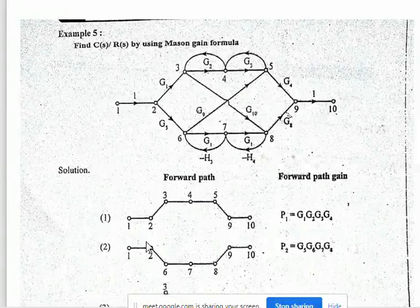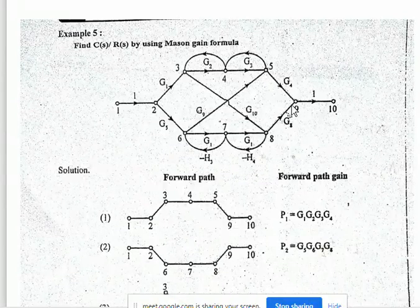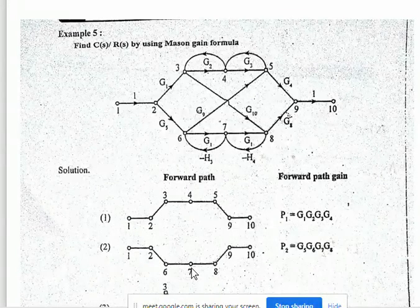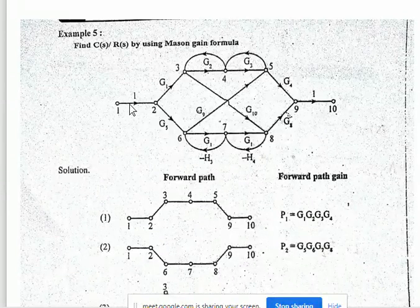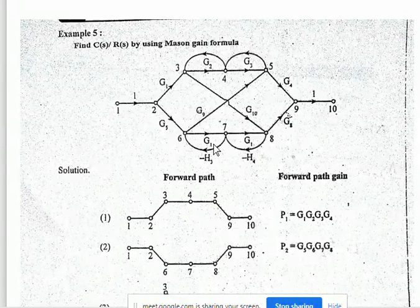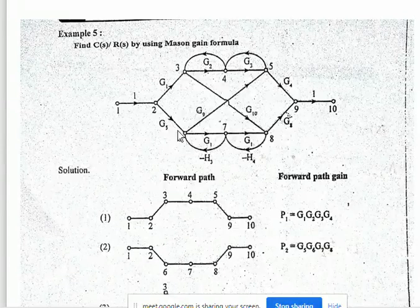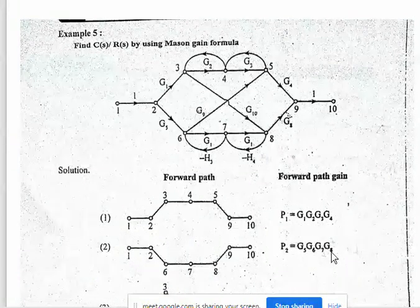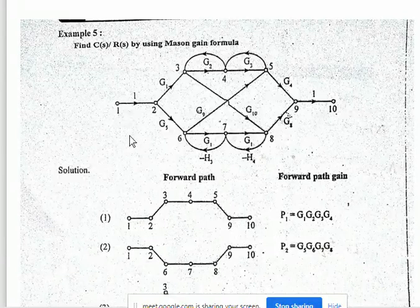The second forward path is 1 to 2, 2 to 6, 6 to 7, 7 to 8, 8 to 9, and 9 to 10. The forward path gain P2 is equal to G5 × G6 × G7 × G8.